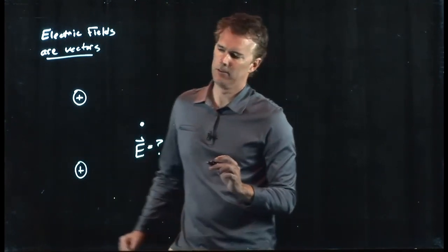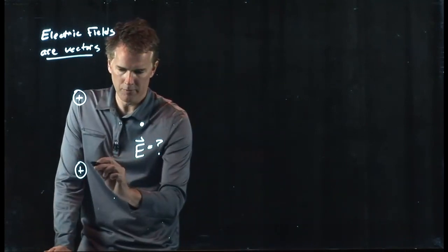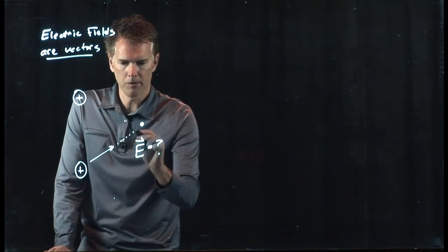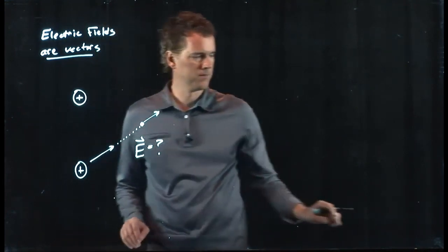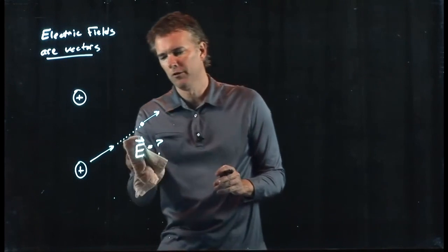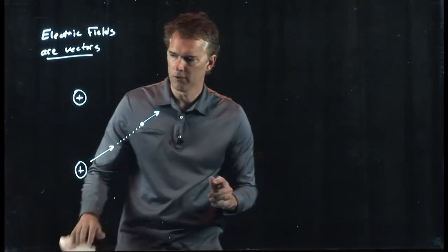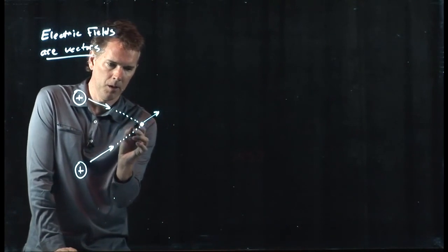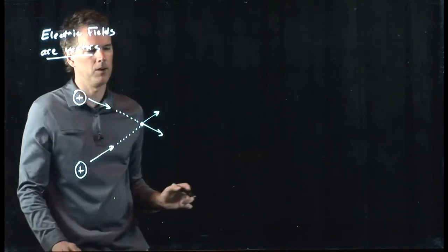Well, they're vectors. So the electric field from this one is going to come out radially, which means up here it's going to be pointed in that direction. The electric field from the other one is also radial from its center, and so it will be pointing down in that direction.